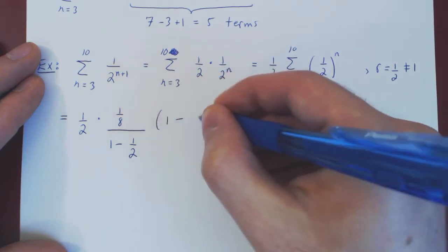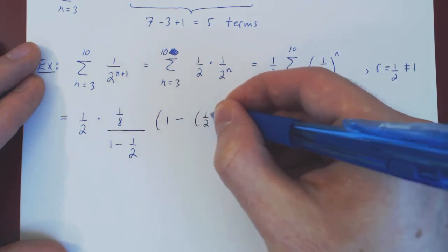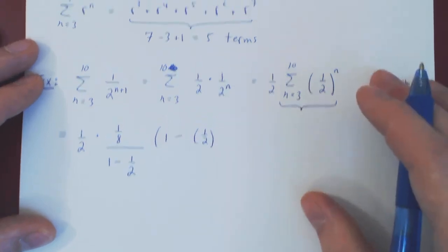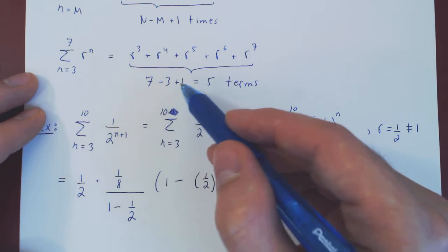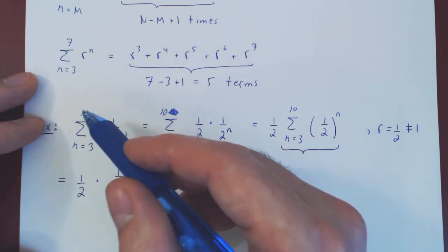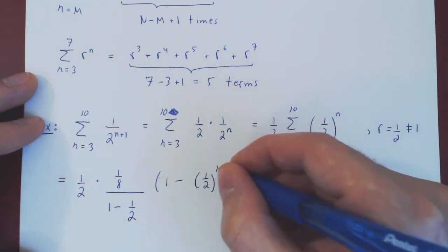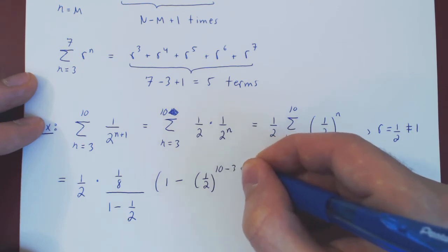Now we have the first term over 1 minus r, we have to multiply by 1 minus r to the number of terms that we are summing. So times 1 minus r, which is 1 half, to the... And if you recall, the number of terms we are summing is the upper bound minus the lower bound plus 1. So here this is 10 minus 3 plus 1.